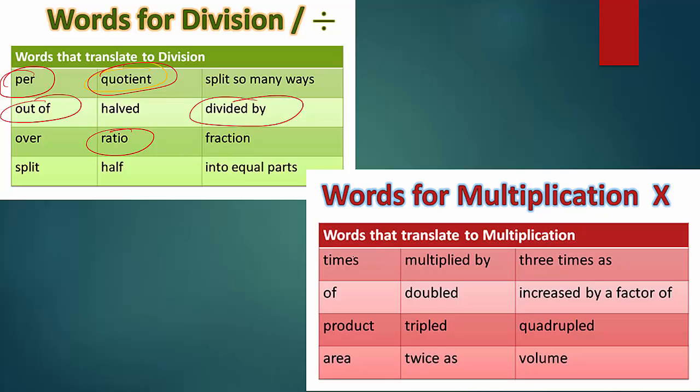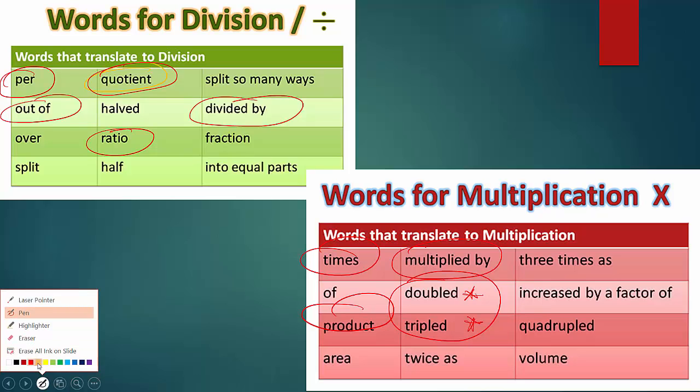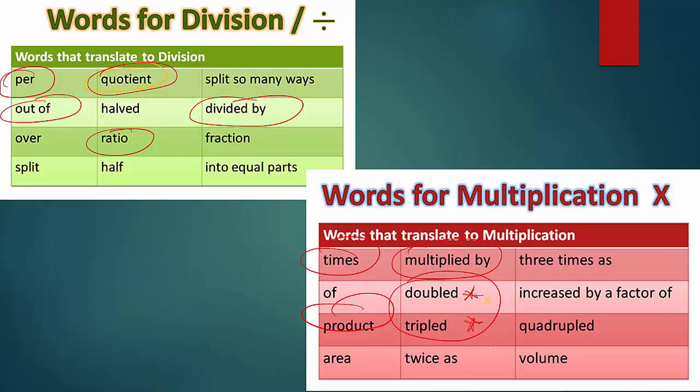And then, for multiplication, times, product, multiplied by, doubled, tripled. These two kind of go hand in hand because these are specific multipliers. So, when you say something's doubled, it's times two. When you say something's tripled, it's times three. So, these are very, very specific ones. Quadruple, that kind of goes hand in hand. And so, you get the idea with that.